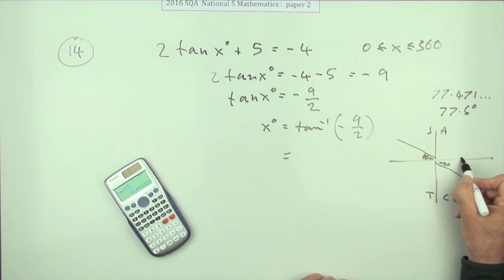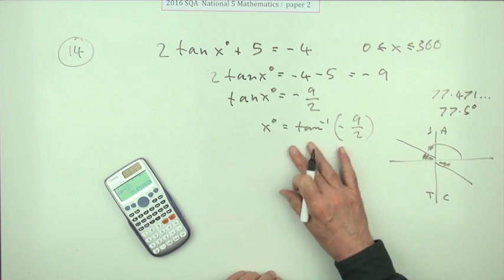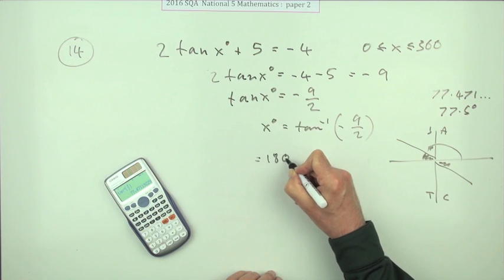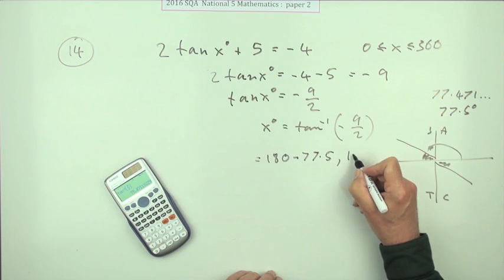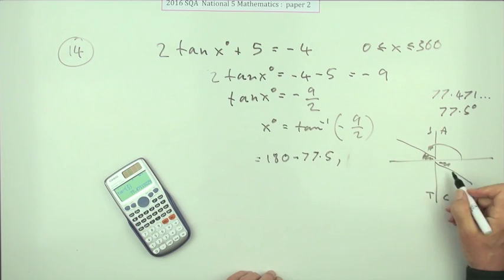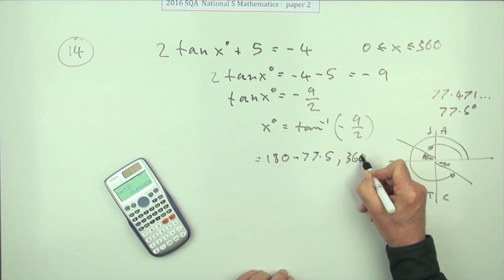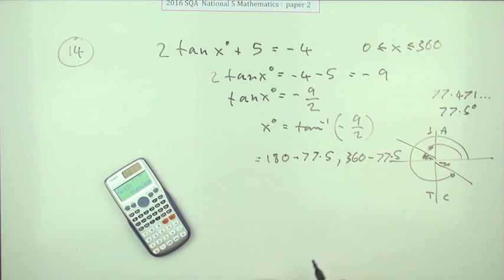The angle you want is either 180 minus it - 180 minus 77.5, or this one all the way around to here which is 360 minus it, 360 minus 77.5.